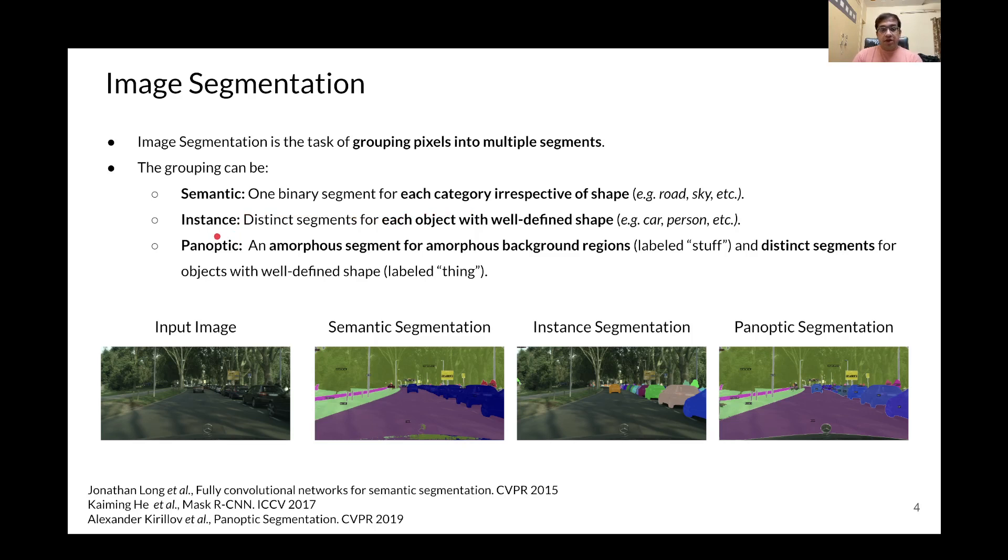Second can be instance segmentation, where we try to mask out distinct segments for each object with a well-defined shape, or each object belonging to a thing class.